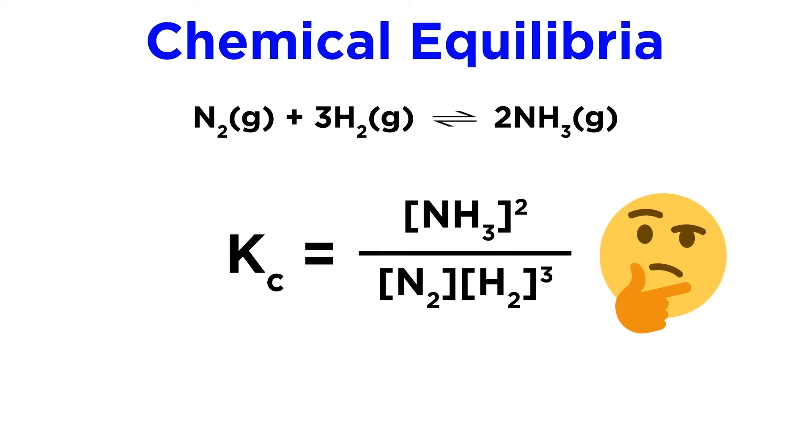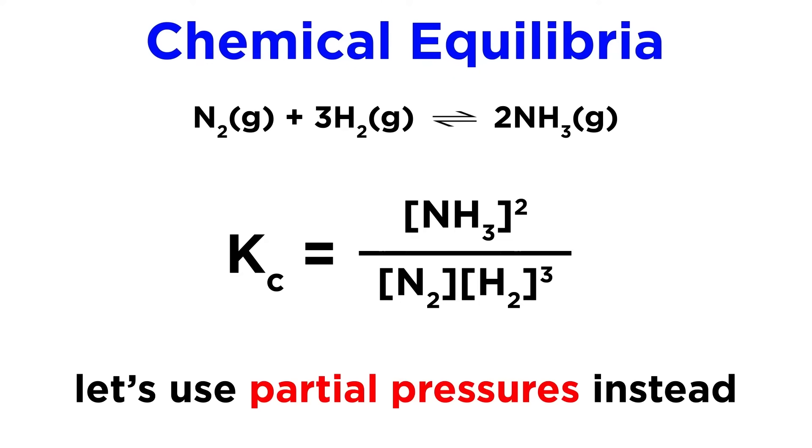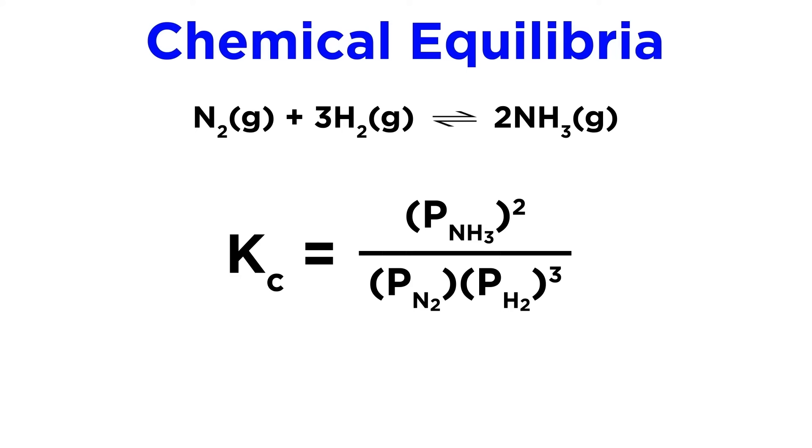Because it is impractical to measure concentrations of gases, it will make more sense to express the equilibrium constant in terms of the equilibrium partial pressures of these gases. So let's change this bracket notation over to pressure terms, with the corresponding substances in the equilibrium constant.